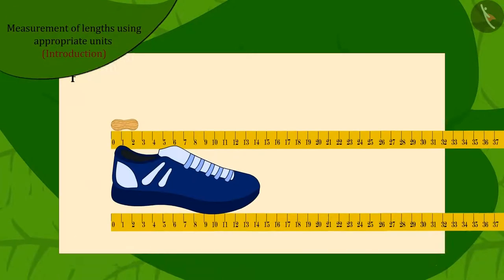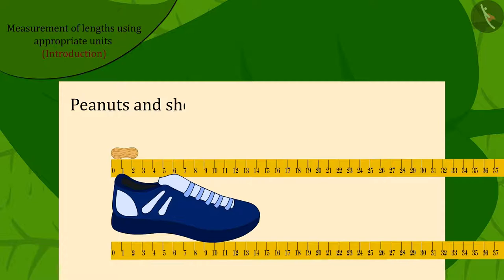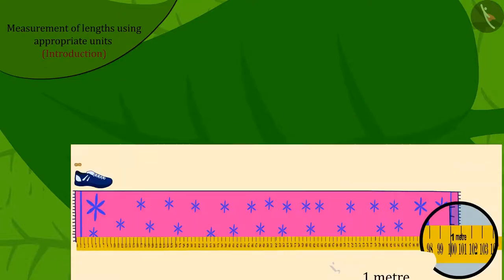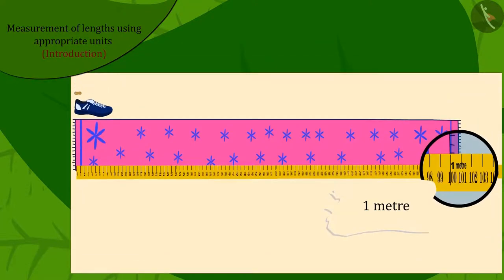Absolutely correct! Peanuts and shoe are much smaller than one meter. It is possible that the length of the mat is one meter. Hence, the correct answer is length of the mat.